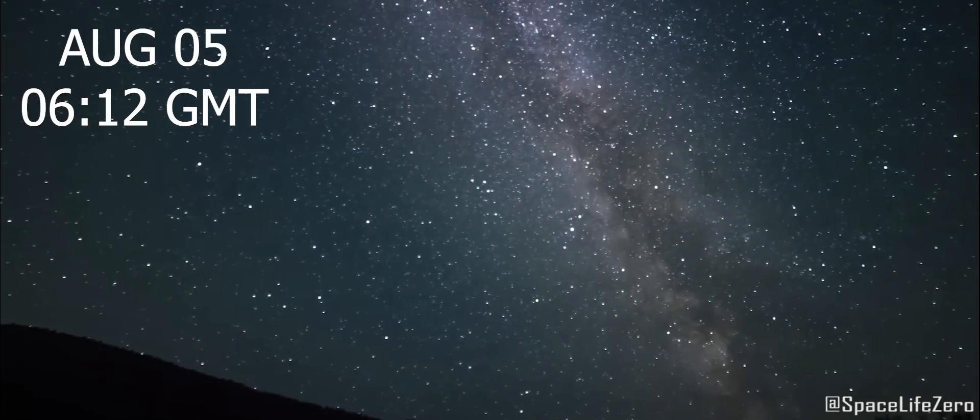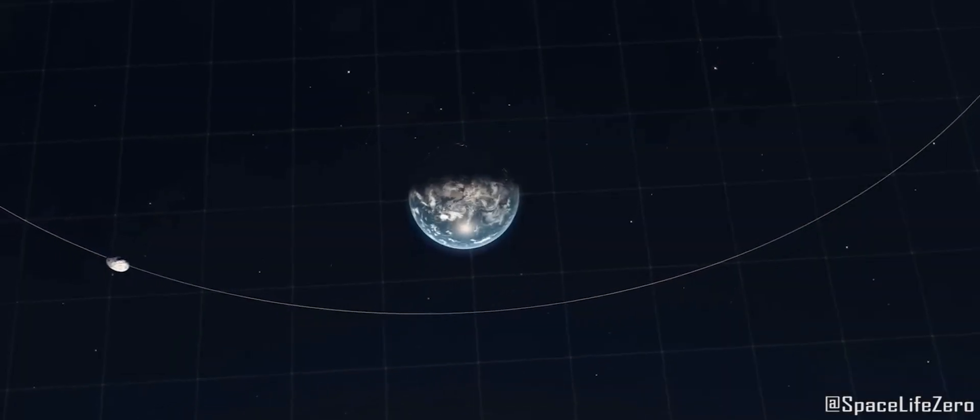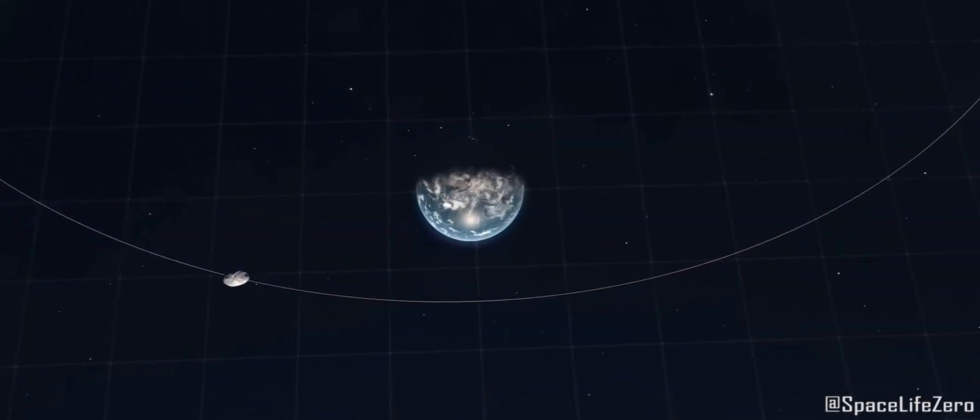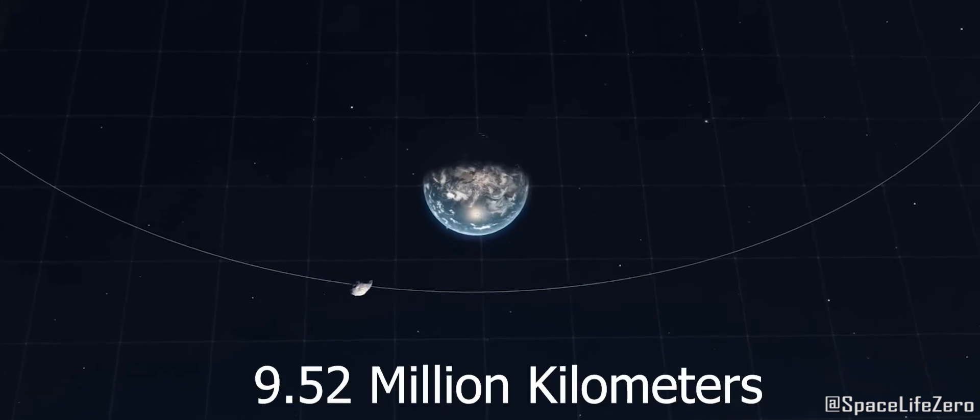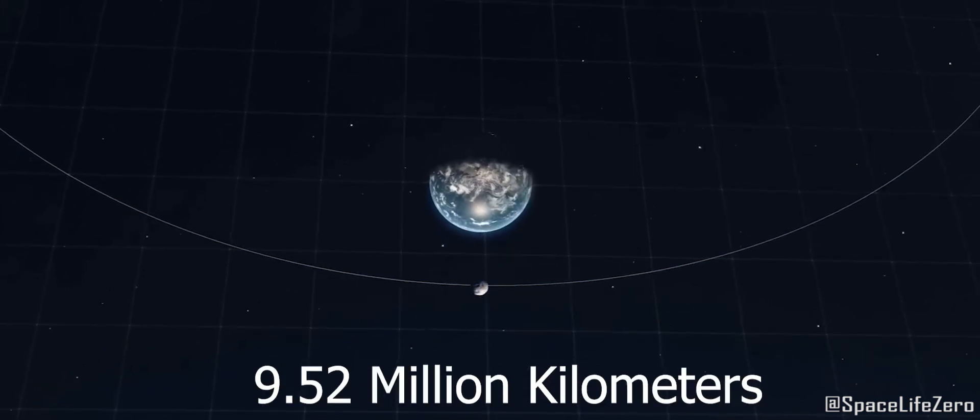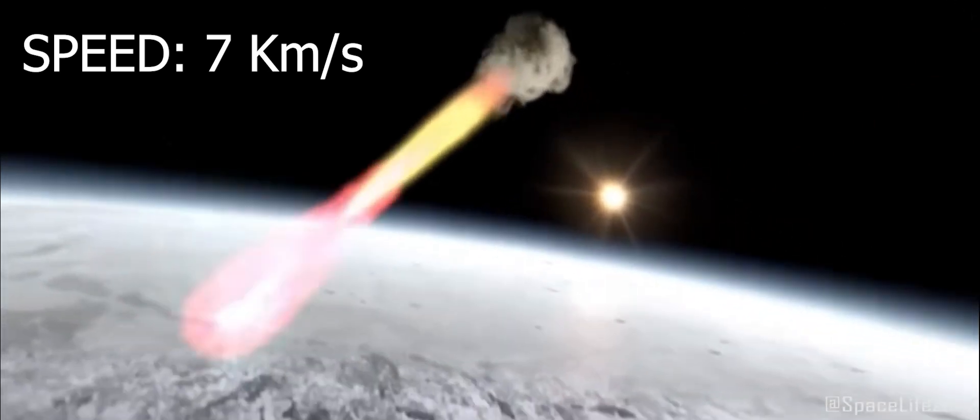On August 5, at 6.12 Greenwich Mean Time, asteroid 2002 KL6 will pass close to the surface of our planet Earth at a distance of 9.52 million kilometers, at a whopping speed of 7 kilometers per second.